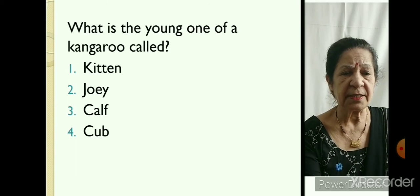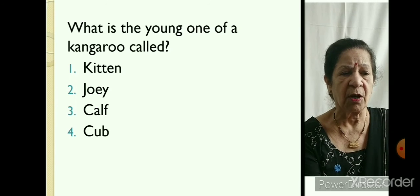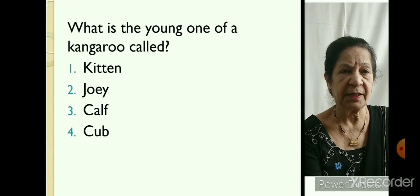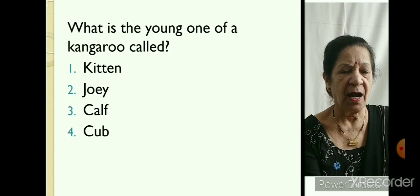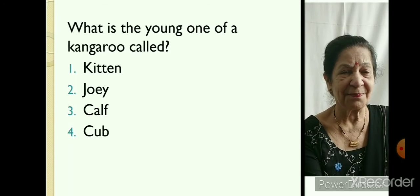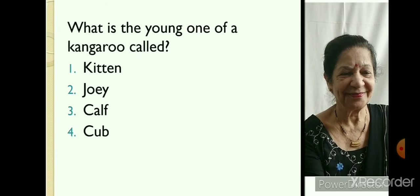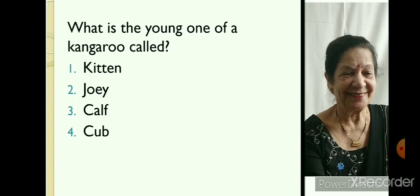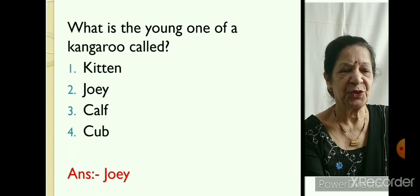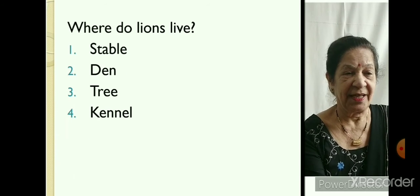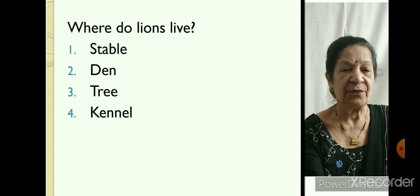What is the young one of a kangaroo called? Kitten, Joey, Calf, Cub. It's Joey.